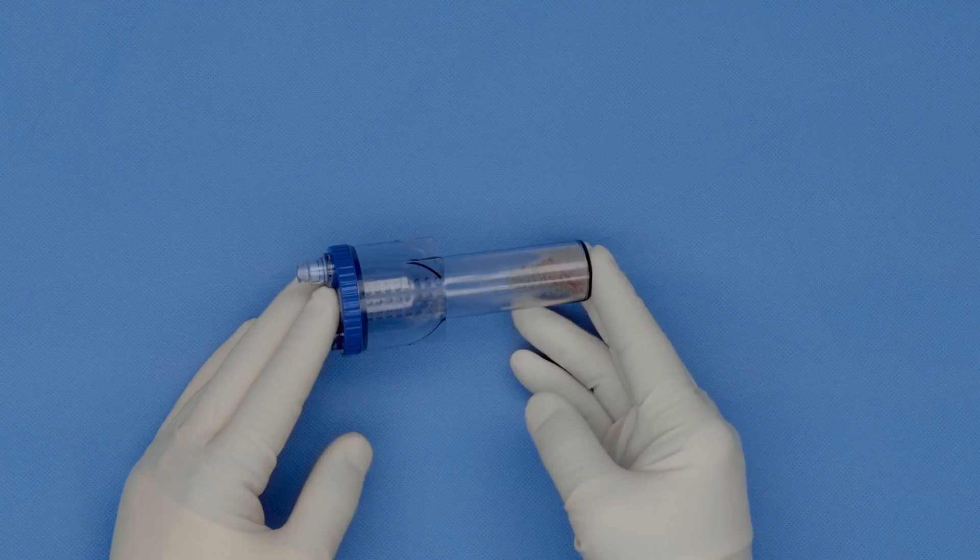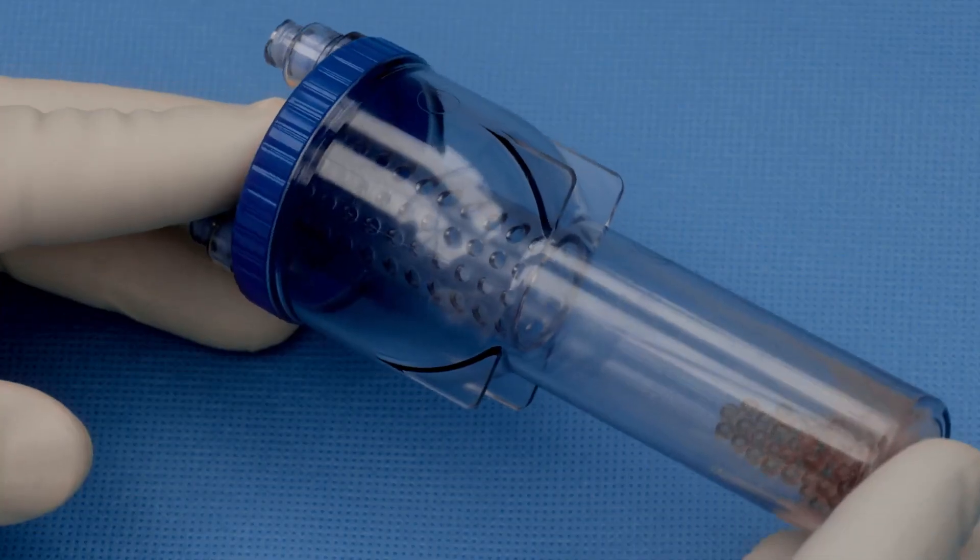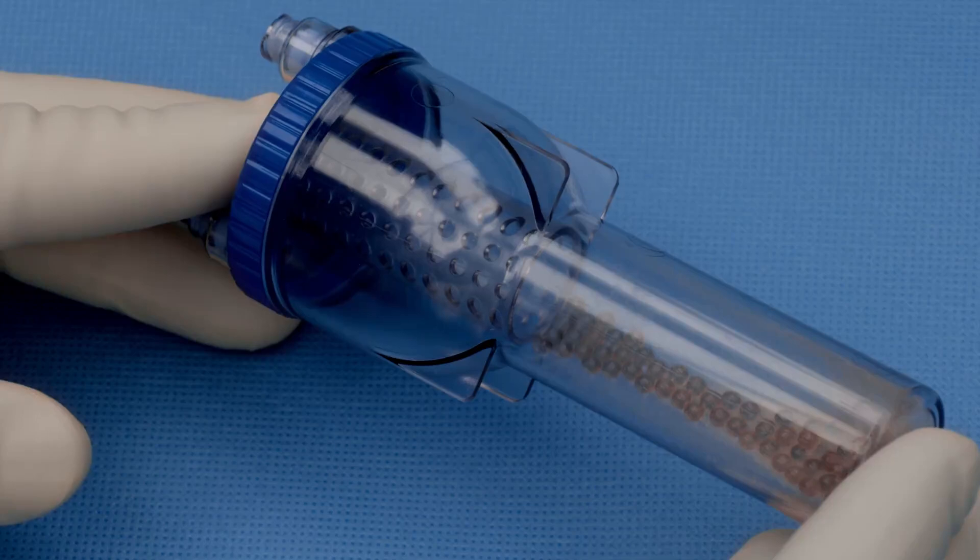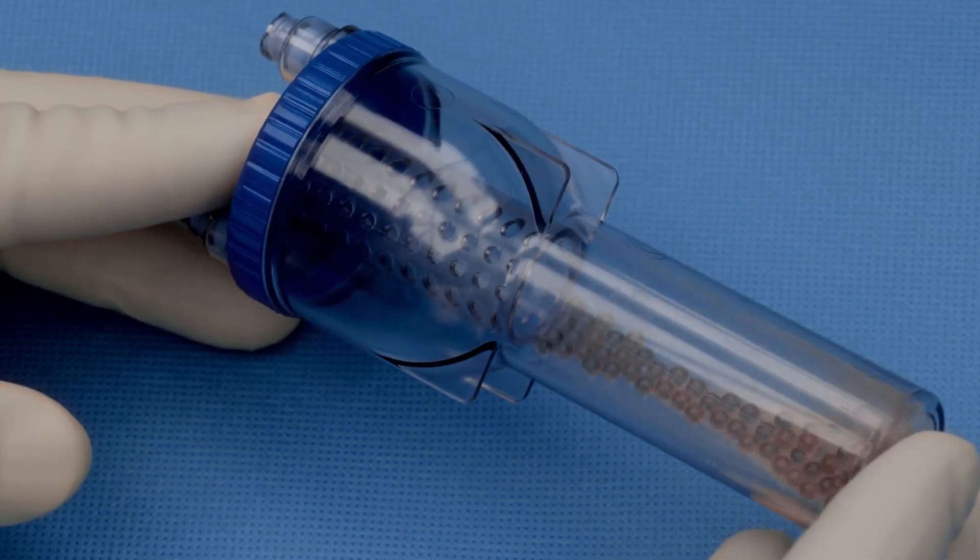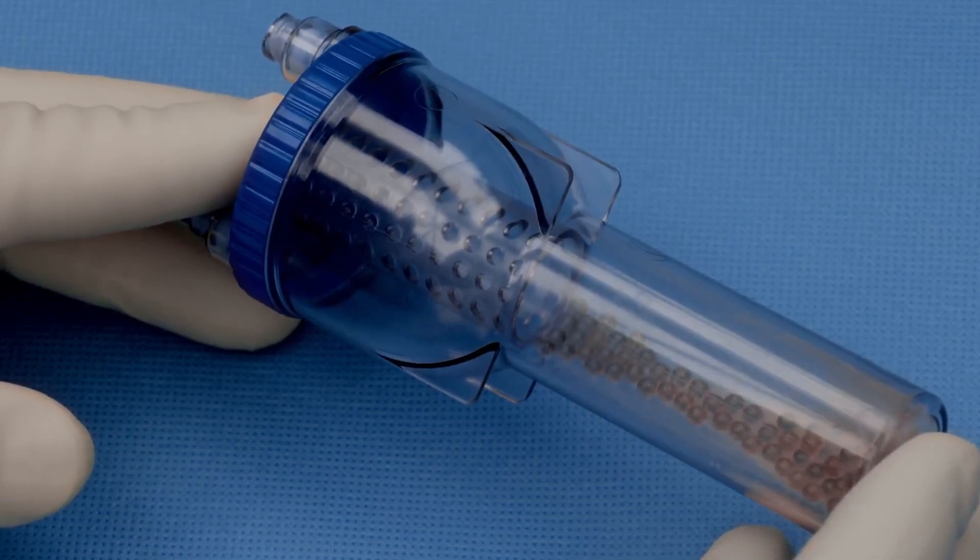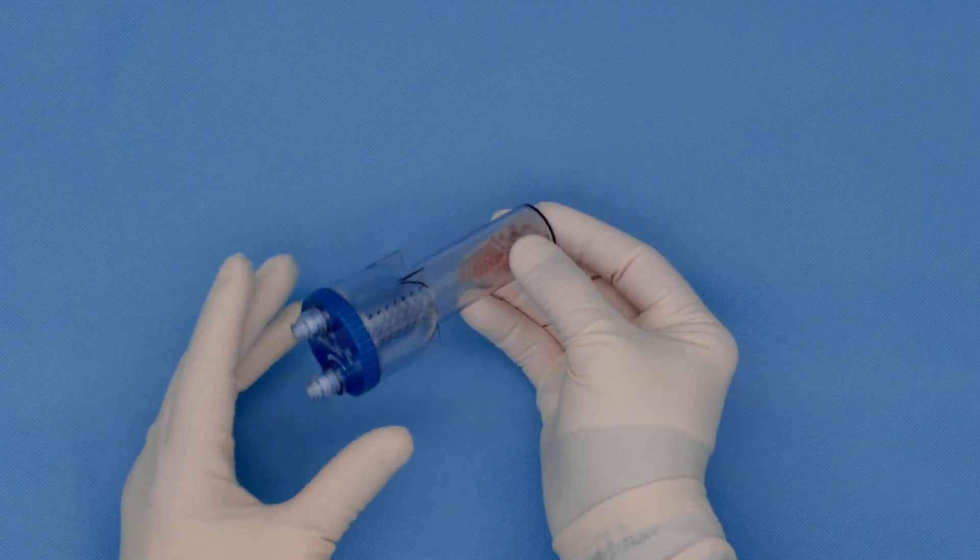The thrombinator device is a closed system that has glass beads inside and with the help of these glass beads it is very easy and convenient to produce autologous thrombin out of ACP.